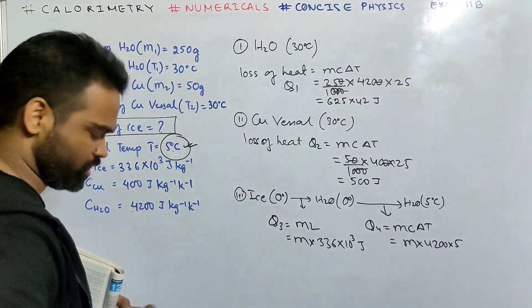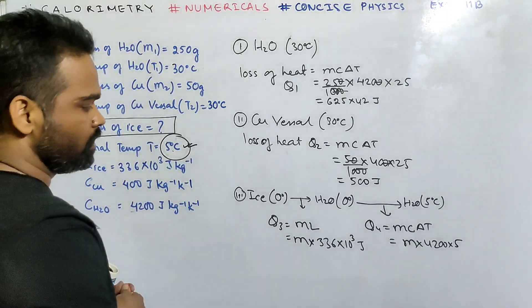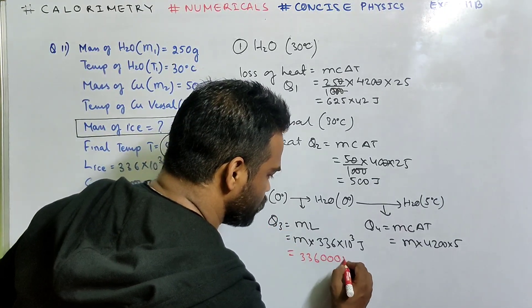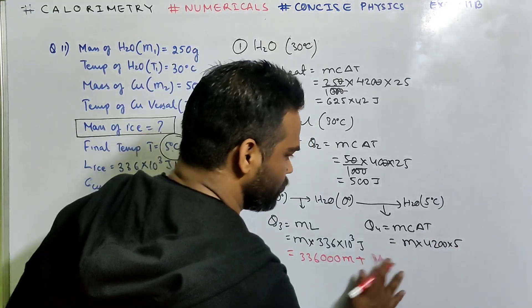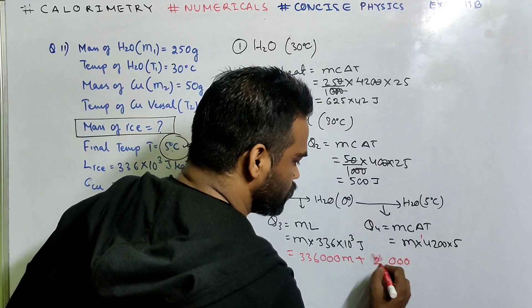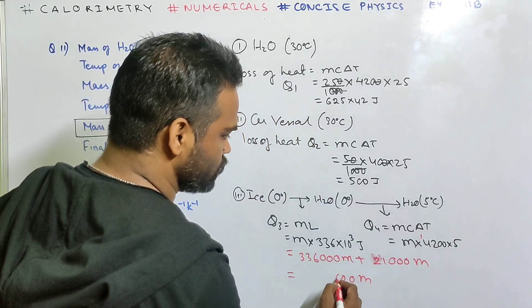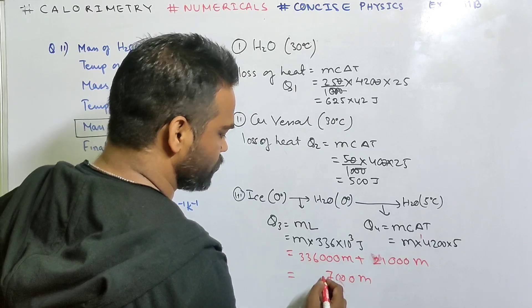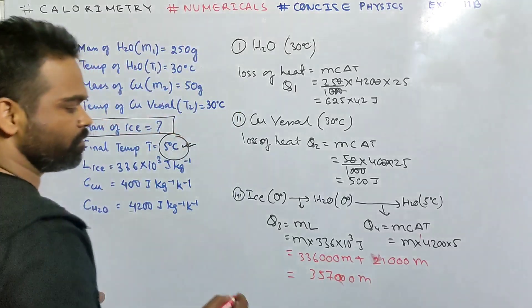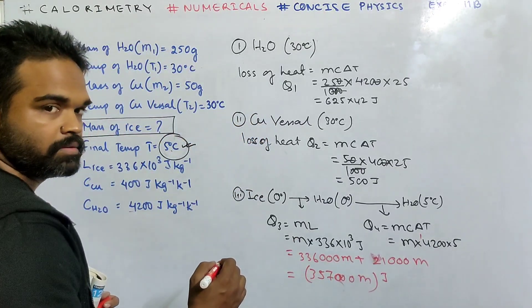Heat lost equals heat gained according to the principle of calorimetry. The heat gained by ice is M × 336,000 + M × 4200 × 5 = M(336,000 + 21,000) = 357,000 M joule.